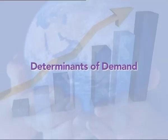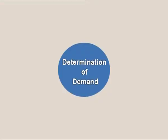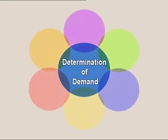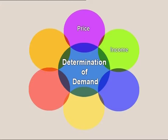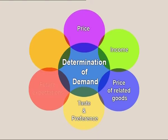Determinants of Demand. Demand is affected by many variables, but according to economists, the six principal variables that influence the quantity demanded of a good or service are: price of a good or service, income of consumers, price of related goods and services, taste and preference of consumers, future expected prices of goods and services, and the number of consumers in the market.